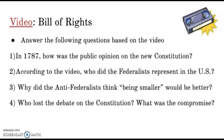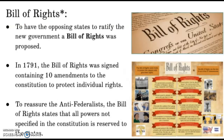We had Federalists and Anti-Federalists. For the Federalists, we had people like Alexander Hamilton and James Madison who were seriously focused on getting this Constitution passed. However, you have Thomas Jefferson — TJ — who was totally against it.